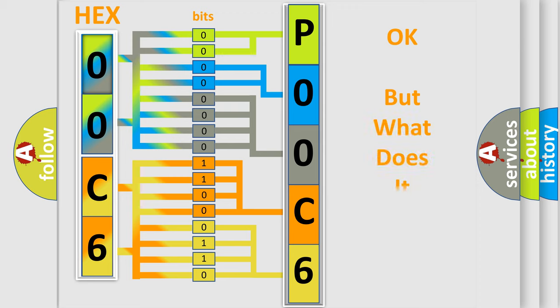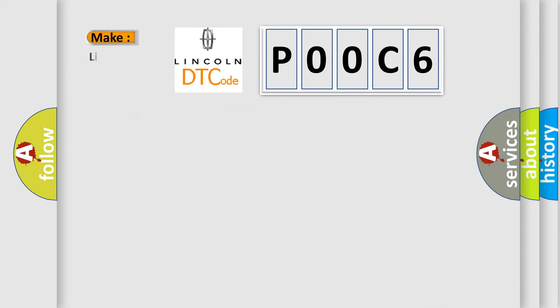The number itself does not make sense to us if we cannot assign information about what it actually expresses. So, what does the Diagnostic Trouble Code P00C6 interpret specifically for Lincoln car manufacturers? The basic definition is hydraulic circuit test duration excessive.